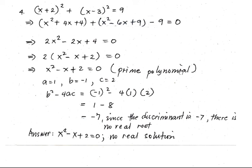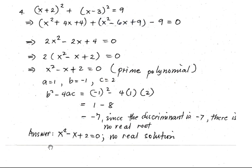This is a prime polynomial — we cannot complete the square, factor it, or extract the square root, so we use the quadratic formula. With a equals 1, b equals negative 1, and c equals 2, the discriminant b squared minus 4ac equals negative 7. Since the discriminant is negative, there is no real root. The required answer is x squared minus x plus 2 equals 0, with no real solution.